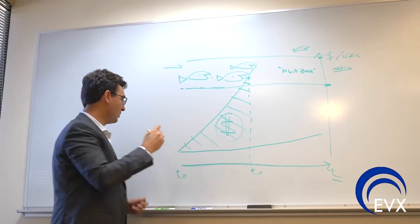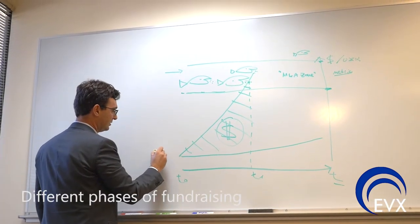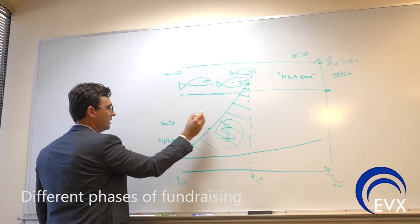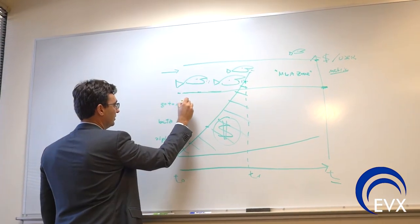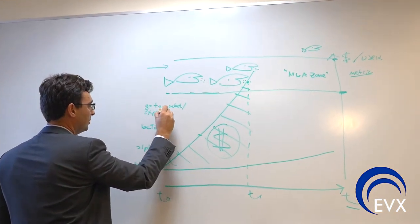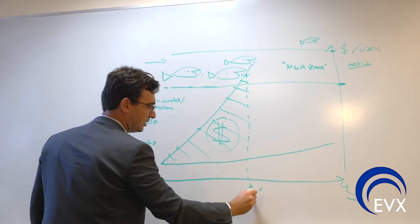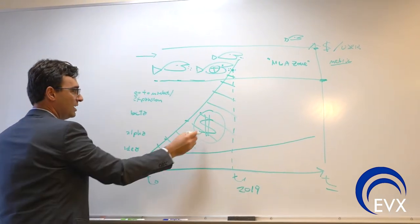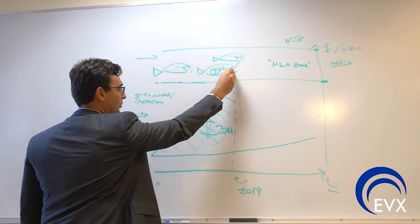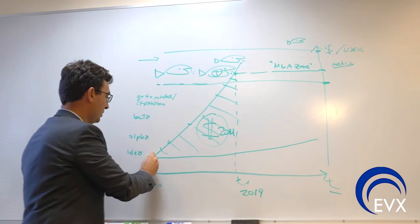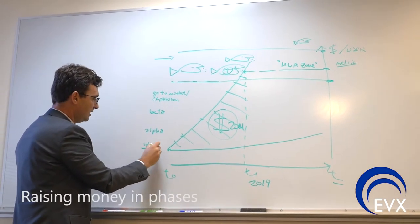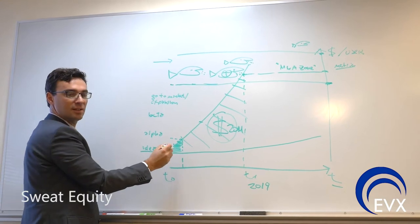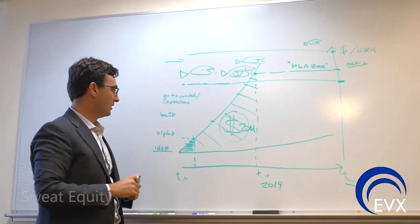But right now, there are different phases of fundraising, right? There's idea, there's alpha, there's beta, and then there is go to market or expansion. If you're here, you say in 2019 this is Tesla, and Tesla's gonna buy us, but we need to raise $20 million to get to a point where we have enough metric that Tesla acquires. Nobody's gonna give you $20 million today. So you have to do it in phases. You've done this. Now maybe you're here now. This is your sweat equity you put in for four years. You have kind of a testable prototype.